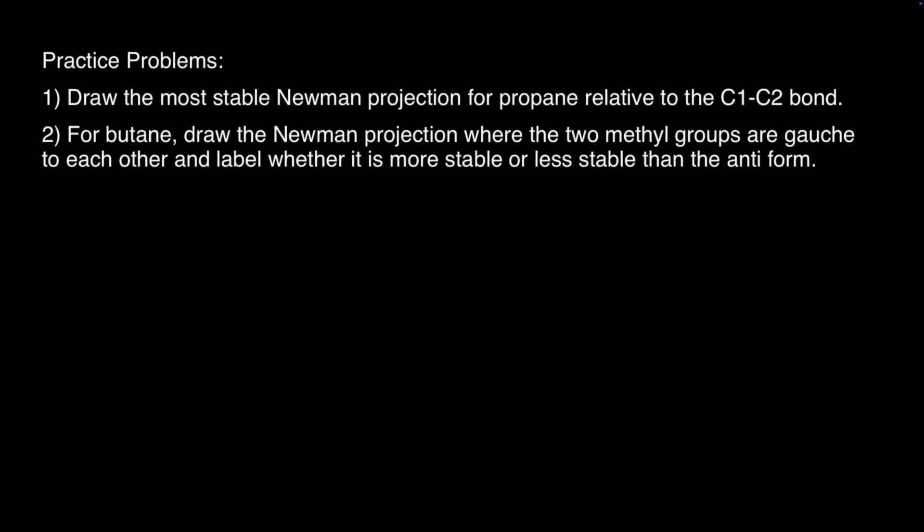Here are some practice problems you can try. Draw the most stable Newman projection for propane relative to the C1-C2 bond. And for butane, draw the Newman projection where the two methyl groups are gauche to each other, and label whether it is more or less stable than the anti form.